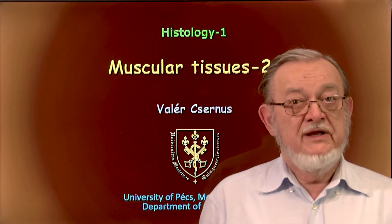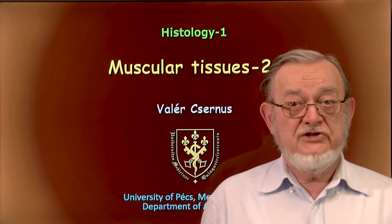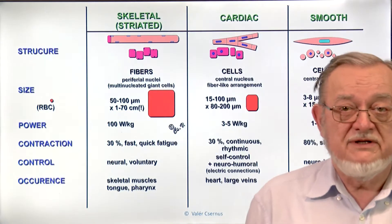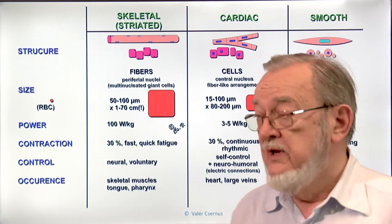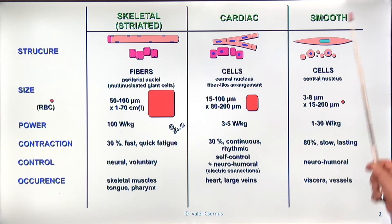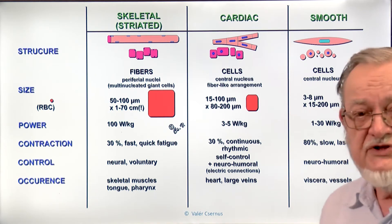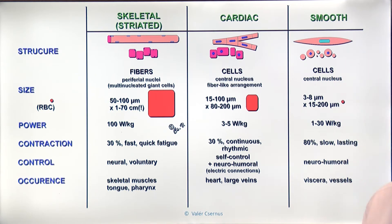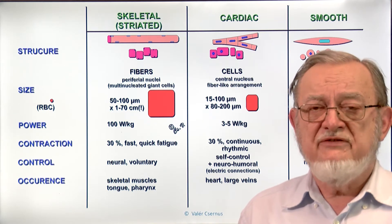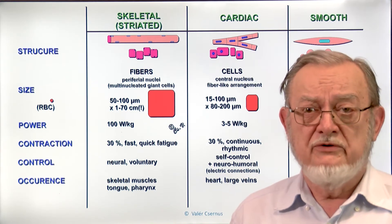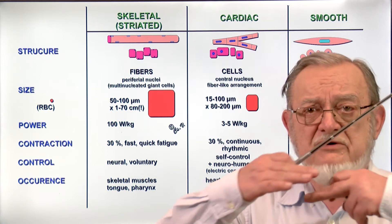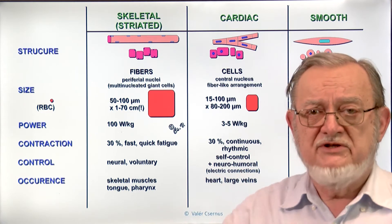Dear students, in this lecture I continue the description of the muscular tissues. As you know, we have three types of muscular tissues. The common feature of these tissues is that all of them have this type of energy-efficient, forceful contraction mechanism, which is based on sliding molecules on each other.